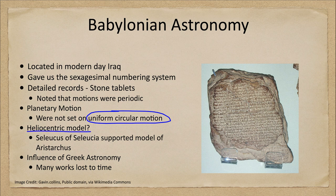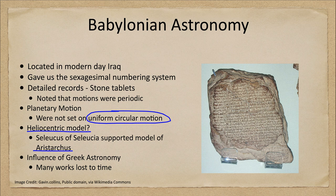There are also some thoughts that maybe there were ideas that the universe was heliocentric — meaning sun-centered. One of the astronomers, Seleucus of Seleucia, supported the model of Aristarchus based on writings. Aristarchus was a Greek astronomer who early on suggested that the sun, not the Earth, was the center of the solar system. However, one of the problems is that we have only scattered records — nowhere near a complete set — as to what the Babylonians studied or knew. We only have what is left to study. But they did give great influence to the Greek astronomers later on, though many of their works are simply lost.